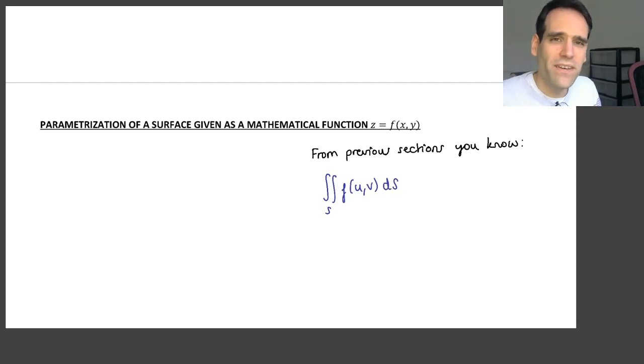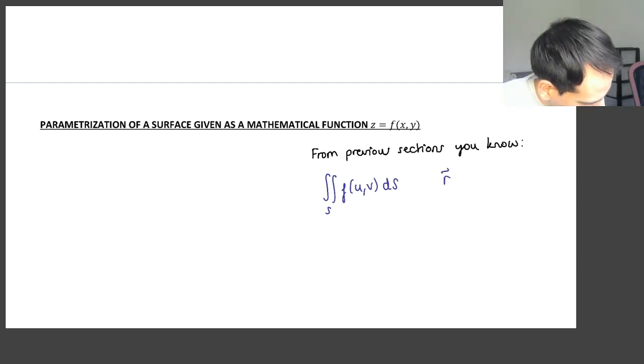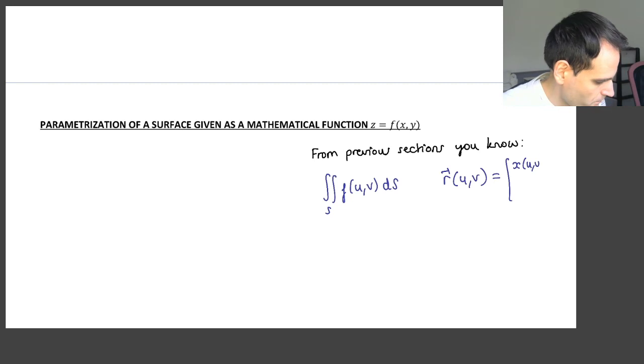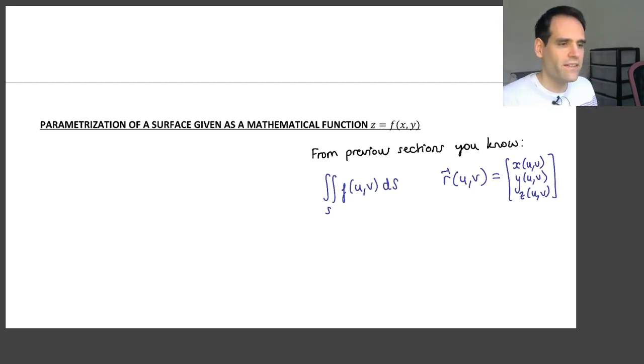When you are given the surface as a parametrized surface, which means you are given a vector r which is a function of u and v. So you are given x as a function of u and v, y as a function of u and v, and z as a function of u and v. You were either given the surface like this or you had to write it in this form, for example a sphere or a cylinder.